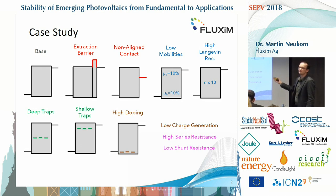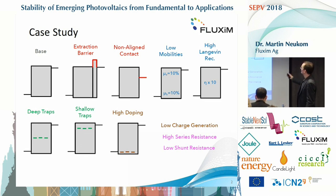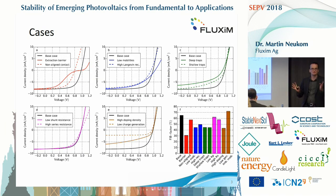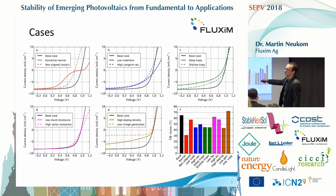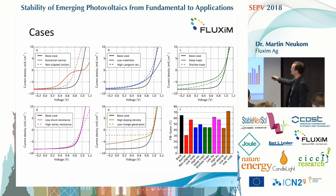To do this study — it's a simulation study — we first defined about 10 cases of common defects. There is one base case, which is just a regular organic solar cell, 100 nanometers thick. It could also be a quantum dot solar cell. Then we add cases where something went wrong: for example, an extraction barrier formed on the interface, or a non-aligned contact that would mean a very low built-in voltage.